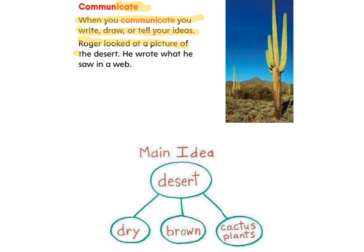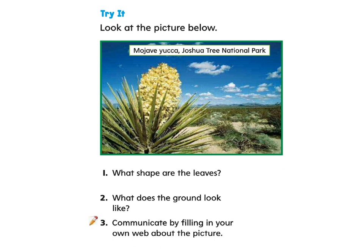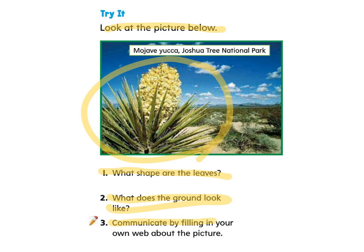A boy named Roger looked at a picture of the desert and wrote what he saw on a web. His main idea was desert and he said that they're dry, they're brown, and they have cactus plants. There are lots of other things we could put — lots of sunlight, a little bit of rain, snakes, and some deserts have tarantulas. Plants that live in a desert are very specific. Take a look at this picture — these are not plants we see growing in Manitoba. Look at the shape of their leaves and what the ground looks like. Fill in your own web about the picture using the web provided in the question sheet.